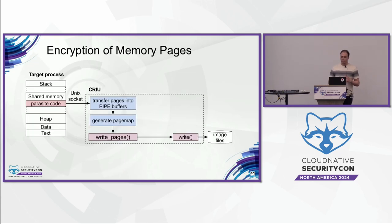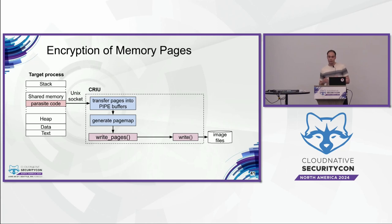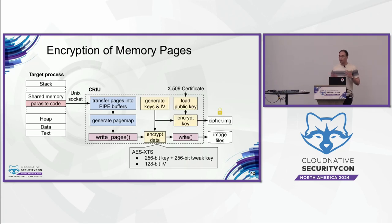Memory pages are checkpointed using something called parasite code — position-independent code that is injected into the target process. It transfers the memory pages into a set of pipes and generates a map of memory pages back to their original virtual addresses. CRIU then writes the memory pages into an output file. The encryption is straightforward: we generate the AES keys, store them in the cipher image, and encrypt the data.